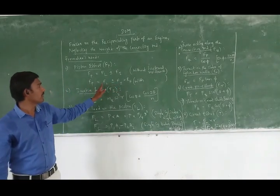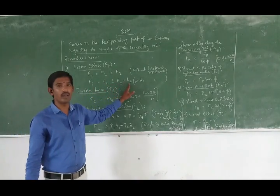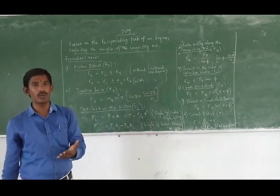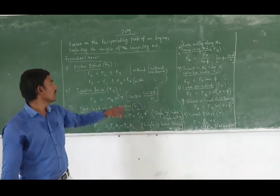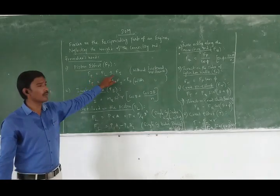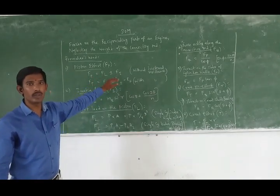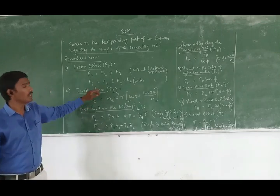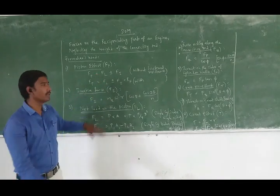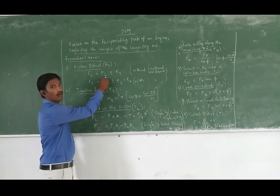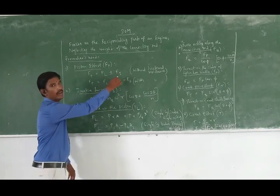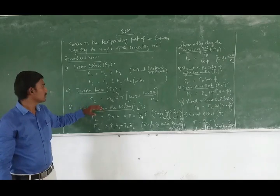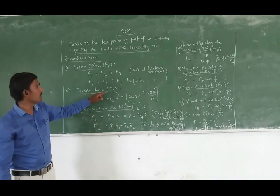So FP equals F1 plus or minus FI minus RL. Then, when friction resistance is negligible, we use only FP equals F1 plus or minus FI. Second term: inertia force. This is referred to as inertia force, FI.